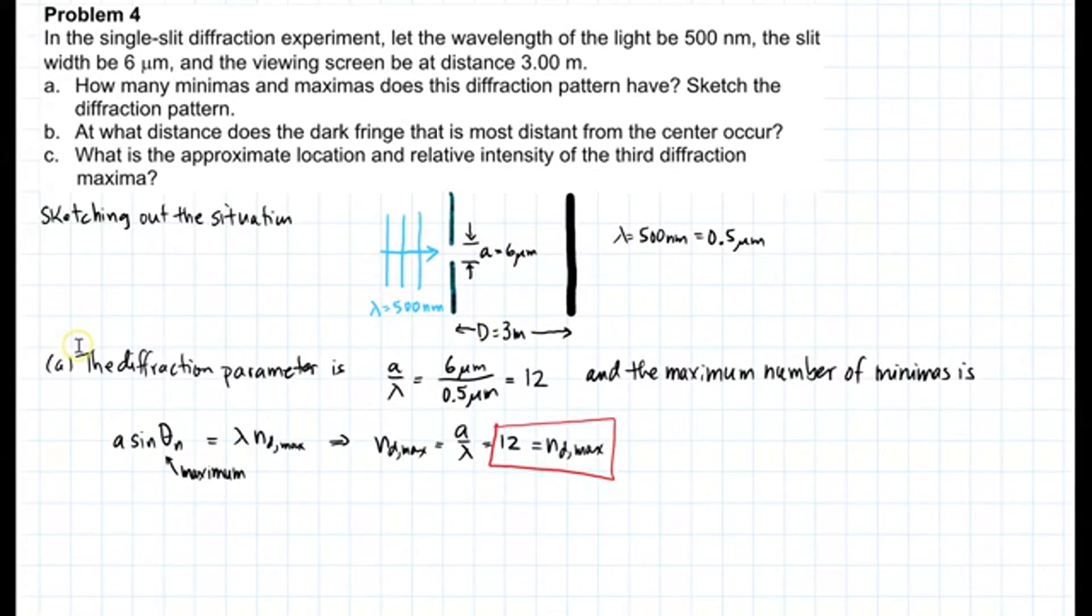Part A: To understand what the diffraction pattern looks like, we have to calculate the diffraction parameter. This is A over lambda, which is 6 microns divided by 0.5, which gives me 12. Therefore, the maximum number of minimas is given by the path difference equation. But for the maximum, sine of theta is 1. So the maximum number of ND is the diffraction parameter, which is 12. That means that there are exactly 12 minimas.